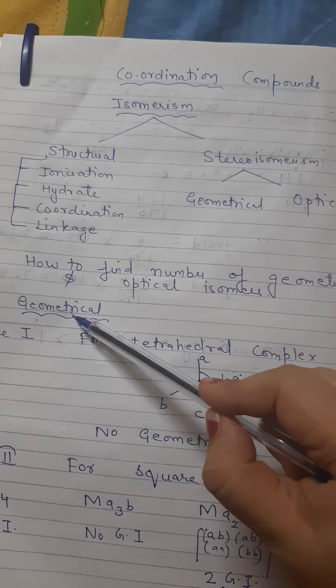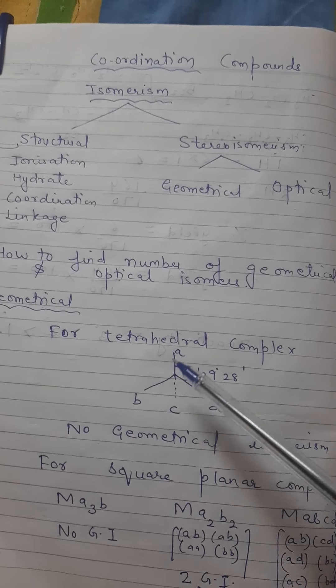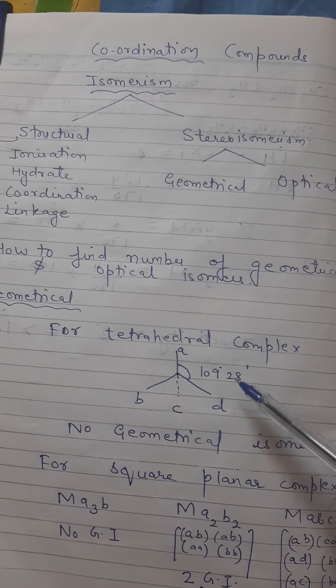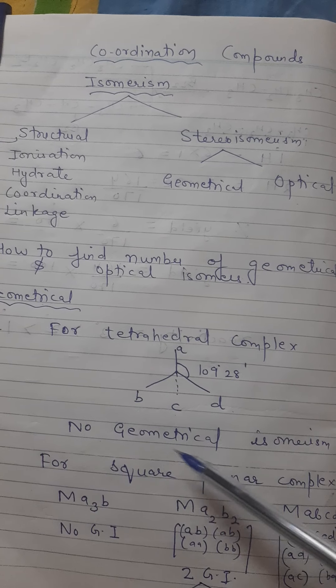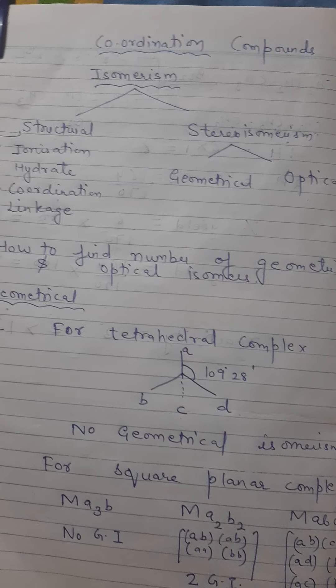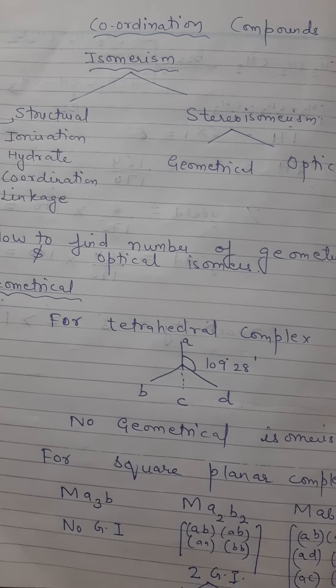For geometrical isomerism, first for tetrahedral complex. If we have a tetrahedral complex MABCD, the bond angle is 109 degrees 28 minutes. There is no geometrical isomerism, no geometrical isomerism for tetrahedral complexes.